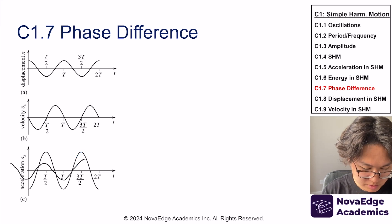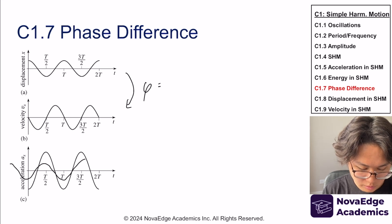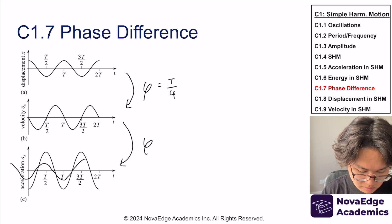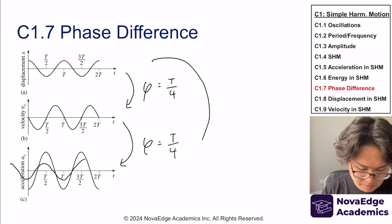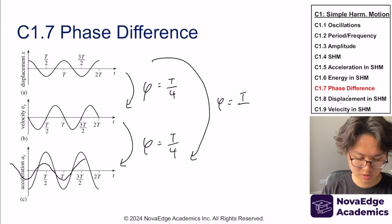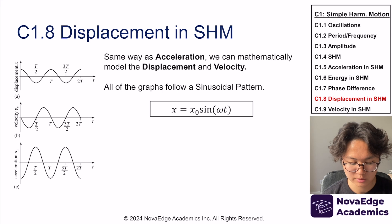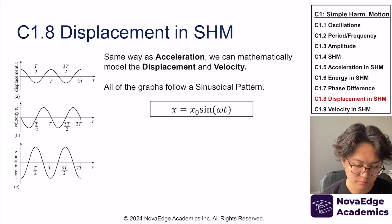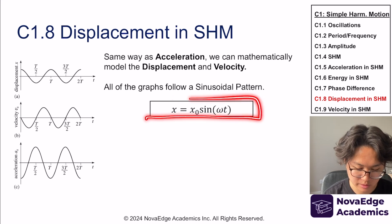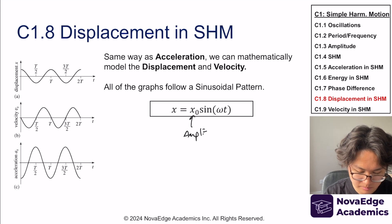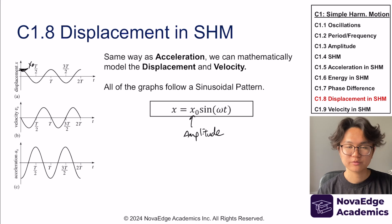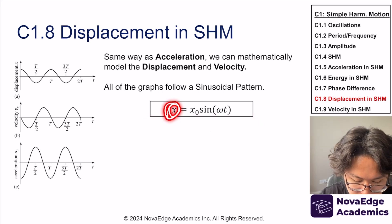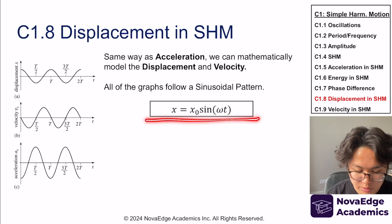Now let's talk about displacement in Simple Harmonic Motion. We can mathematically model displacement as x = x₀ sin(ωt), where x₀ is the amplitude — the maximum displacement possible. The benefit of this function is that you can actually get the displacement at a certain time. So if I know the time, I can get the displacement — for example, what's the displacement at time equals five seconds?